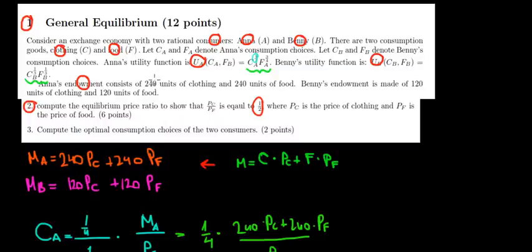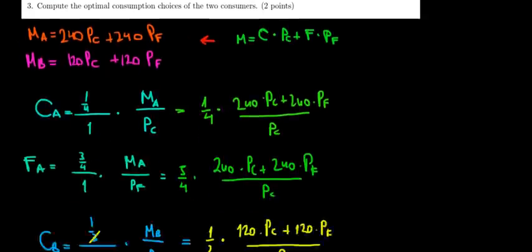So what are the endowment points? We can see that we have 240 units of clothing for Anna and 120 units of clothing for Benny, so in total we have 360 units of clothing. We have 240 units of food for Anna, 120 units of food for Benny, so we have also 360 units of food in total.